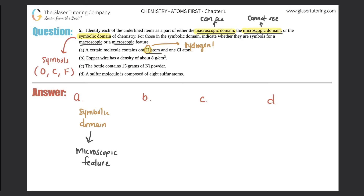B: copper wire has a density of about 8 grams per centimeter cubed. Did they use a symbol here? No — they literally wrote out the word 'copper,' so it's not part of the symbolic domain. Now we just need to figure out whether it's macroscopic or microscopic. Can we see copper wire with our naked eye? We definitely can, so this would be part of the macroscopic domain.